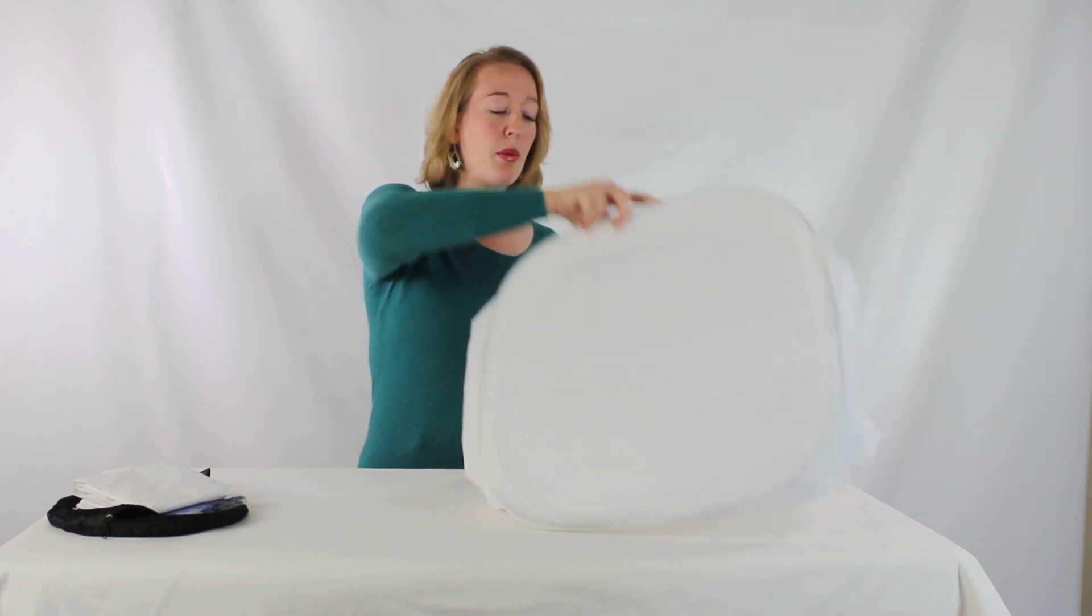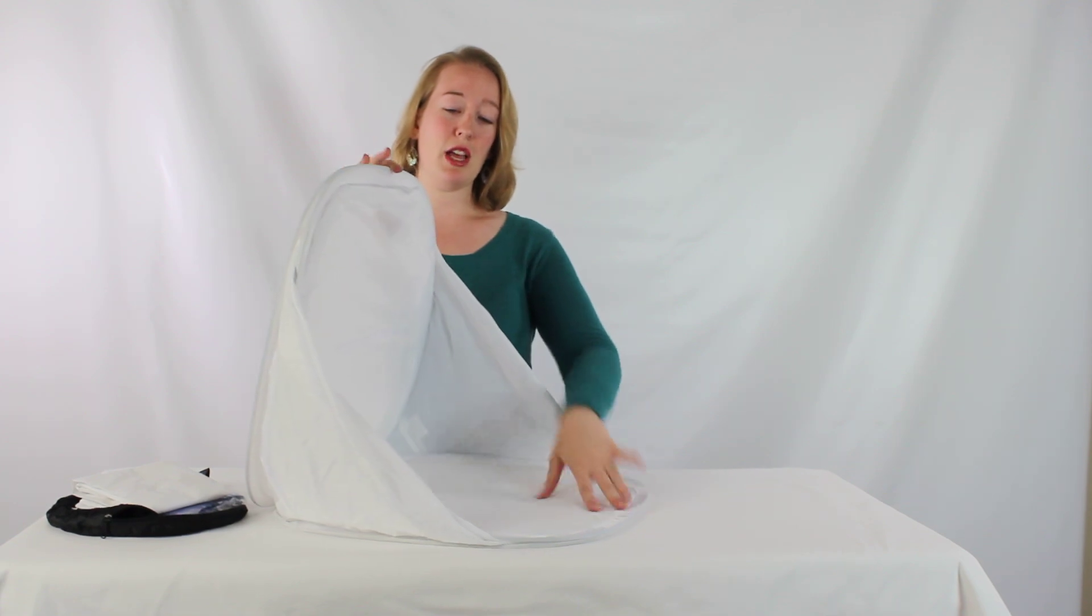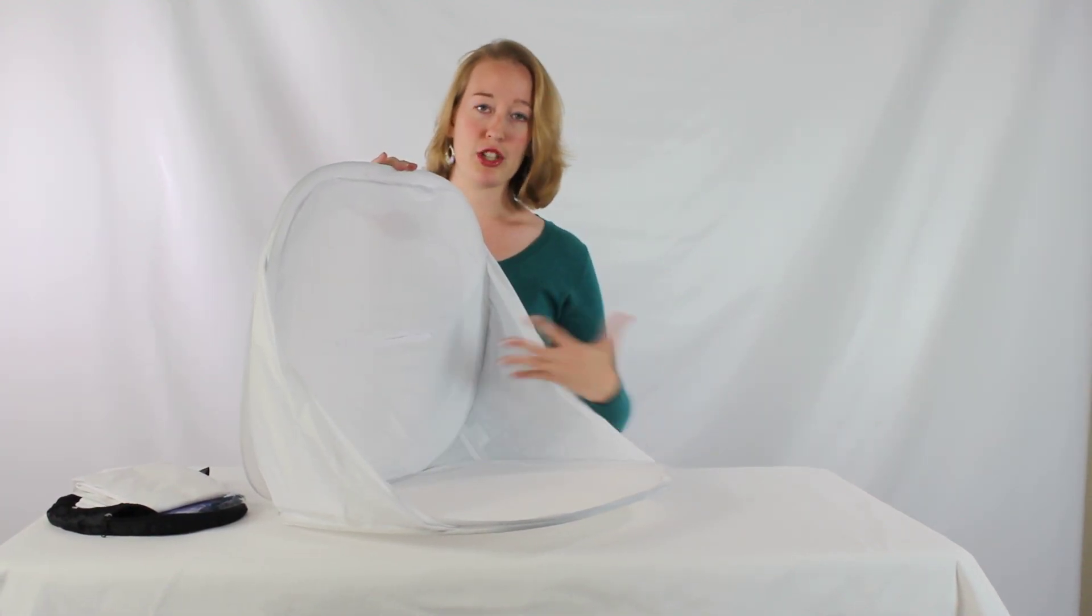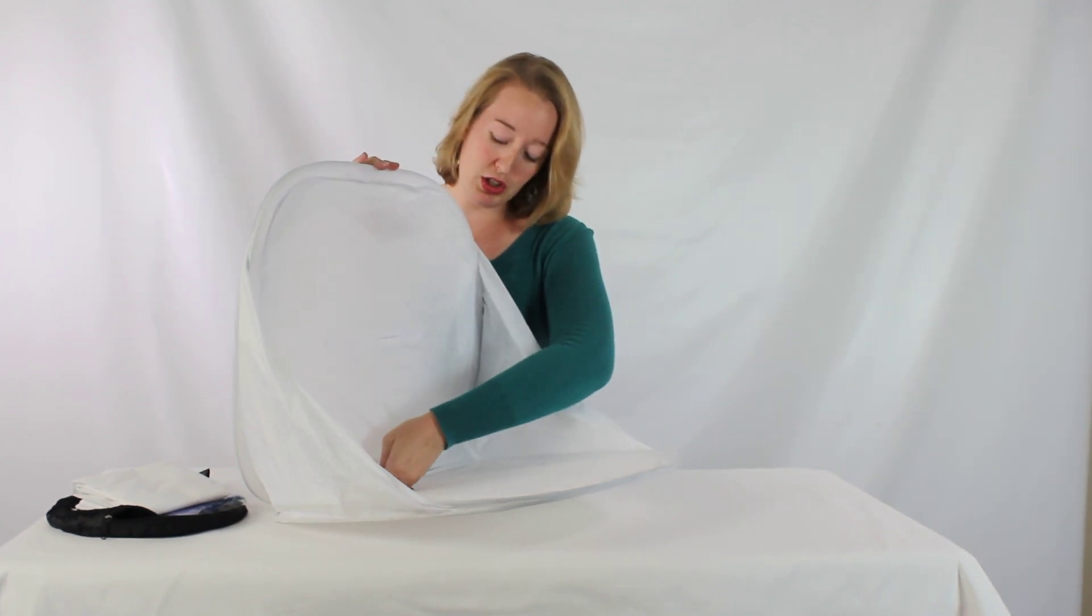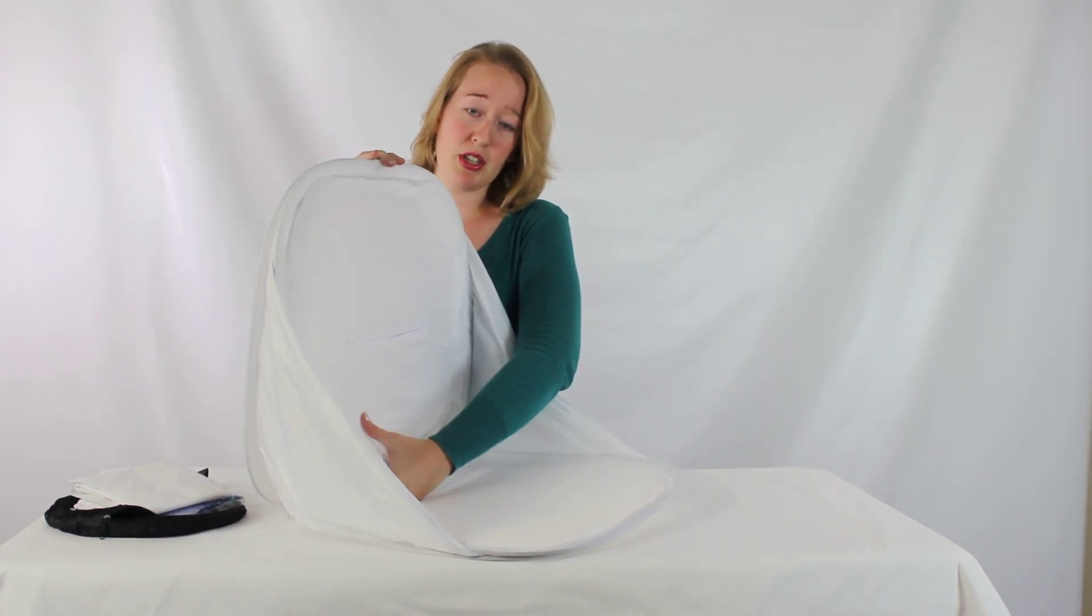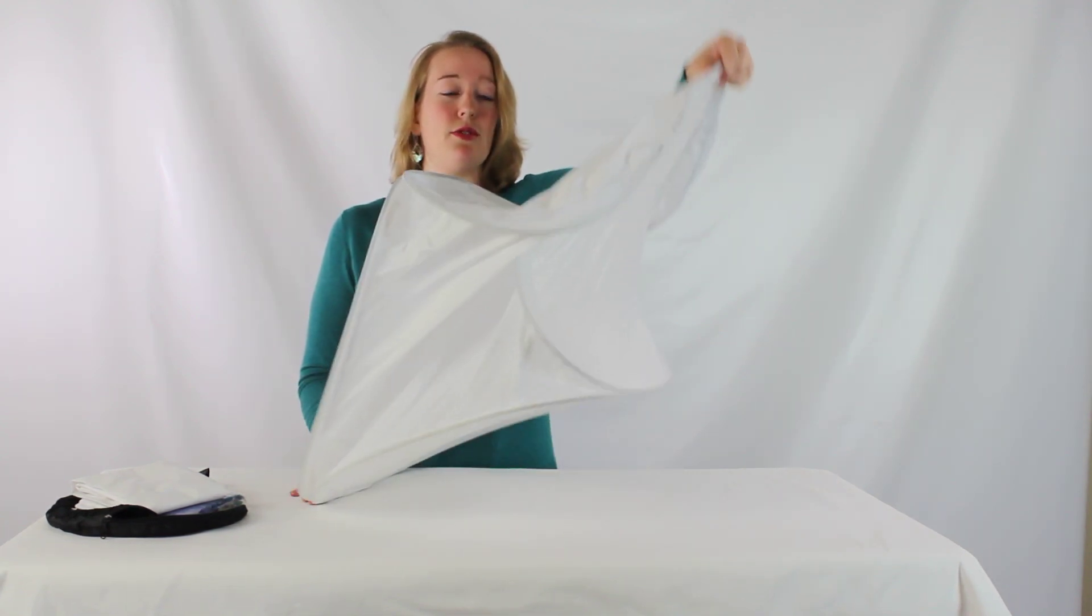Now the problem most people have is that once it's in this shape—I call this the clamshell shape—they're not quite sure how to pull it out. What you're going to do is reach into the center here and grab these metal bars, and you're literally just going to force them out.